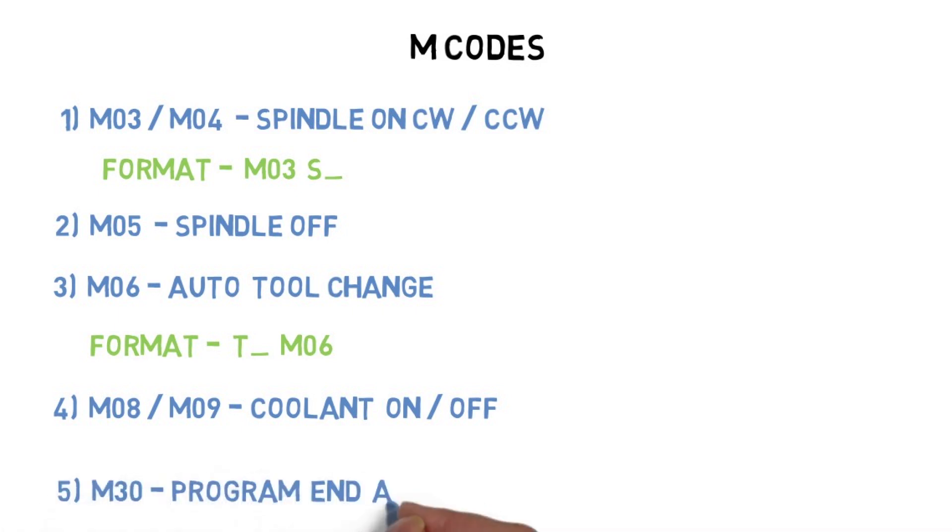Number five, M30 - Program end and rewind. This is used at the end of the program to communicate to the machine that the program is finished.